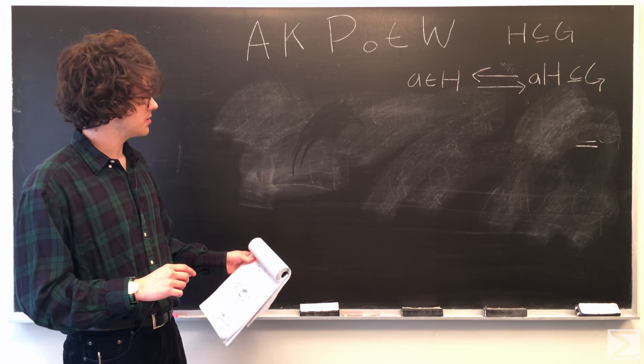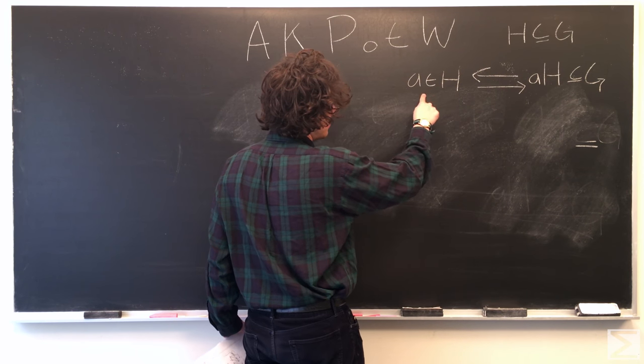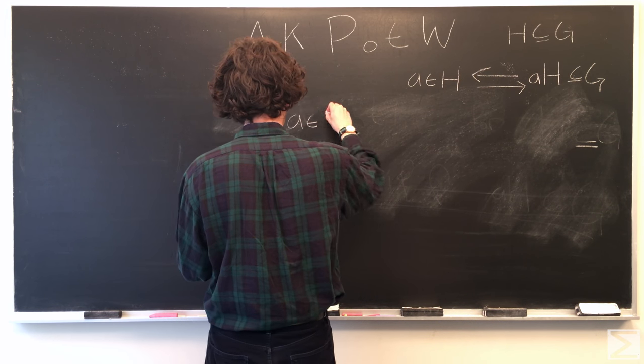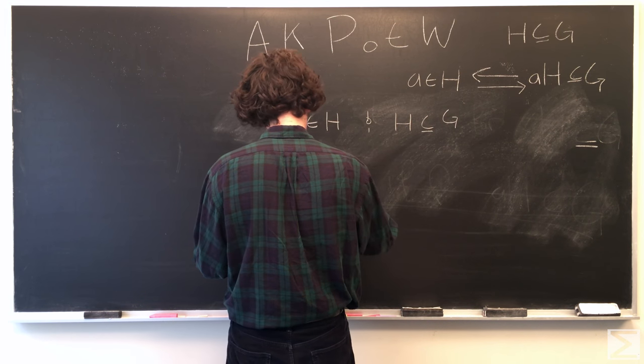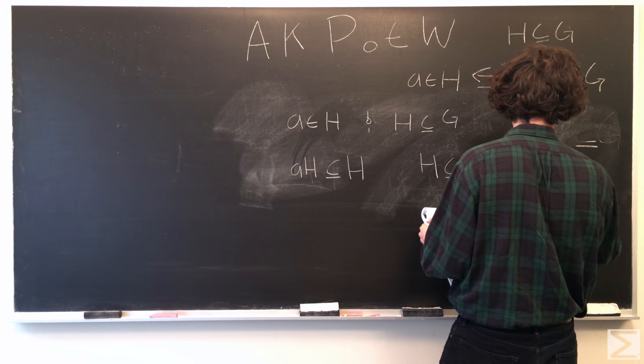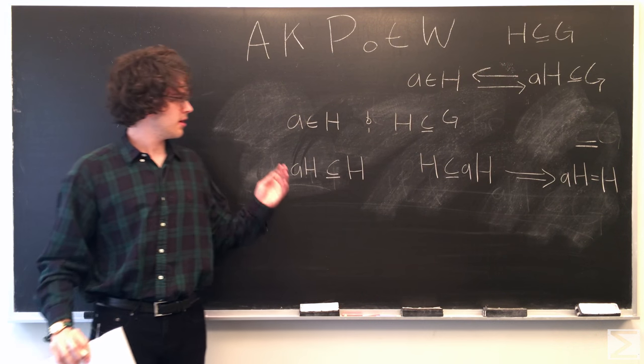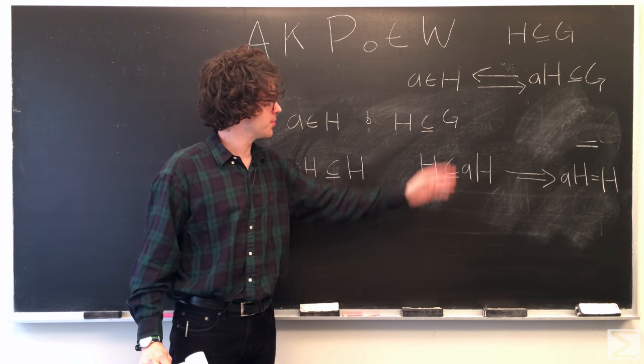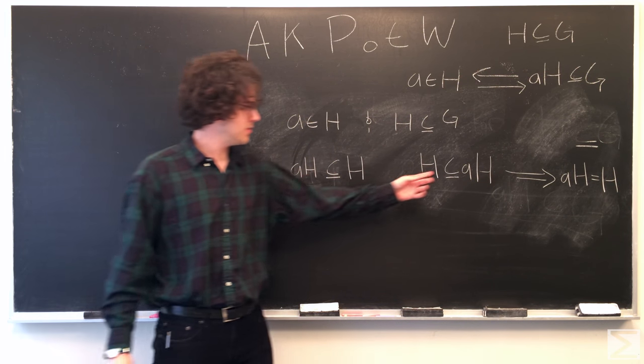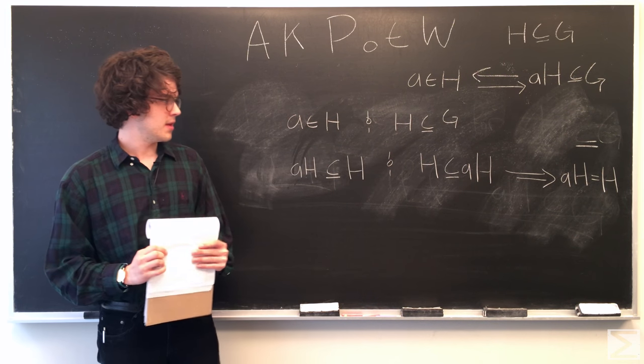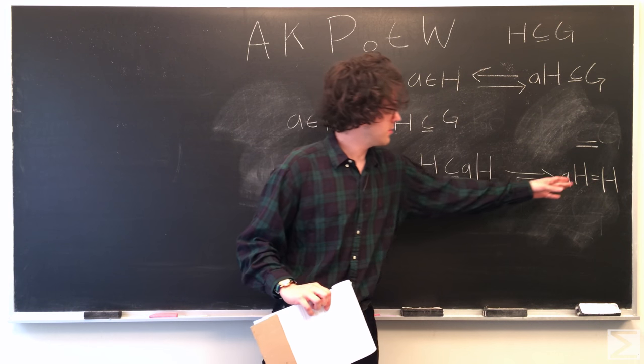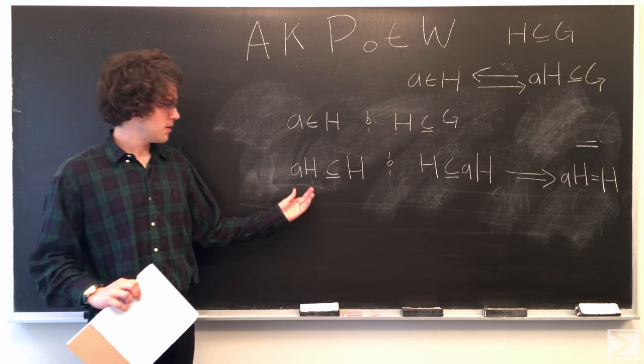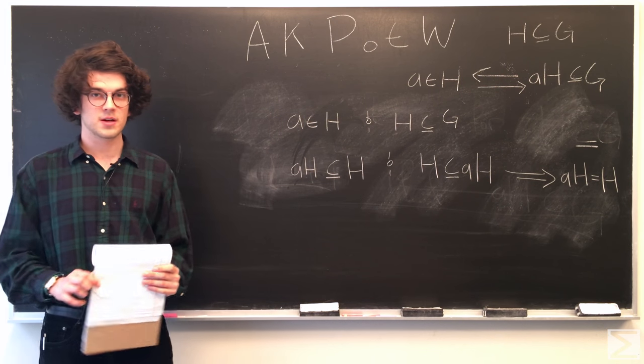So first, we're going to prove this way. If A is an element of H, then A-H is a subgroup of G. So here I have an outline of this proof. Here's what we know: A is an element of H, and H is a subgroup of G. If we can prove these two things, then we can show that A-H equals H, and since H is a subgroup of G, A-H is also a subgroup of G. But we still need to prove these two things, which can be done fairly quickly.